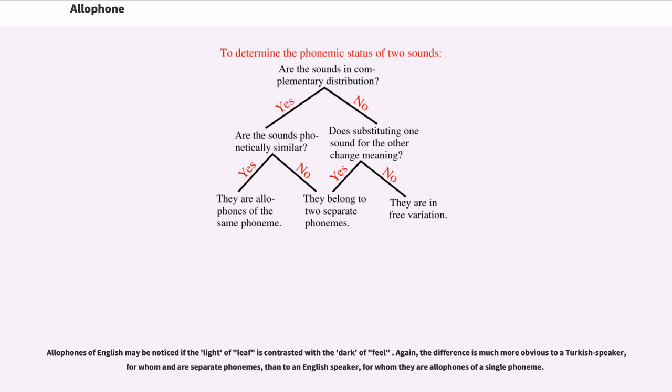Allophones of English l may be noticed if the light l of leaf is contrasted with the dark l of feel. Again, the difference is much more obvious to a Turkish speaker, for whom l and ɫ are separate phonemes, than to an English speaker, for whom they are allophones of a single phoneme.